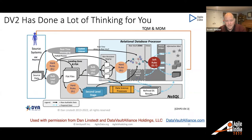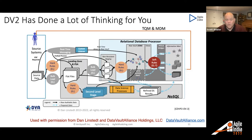An incredible amount of thinking has gone behind Data Vault 2's methodology, architecture, and design patterns. You ignore those patterns at your peril — I've seen organizations that think they can rethink some of the patterns and it always goes poorly. I'm not a fan of prescriptive methods at all; I think they're almost always a bad idea. Data Vault 2 is pretty much the only thing I've found where I would follow their advice to the letter.